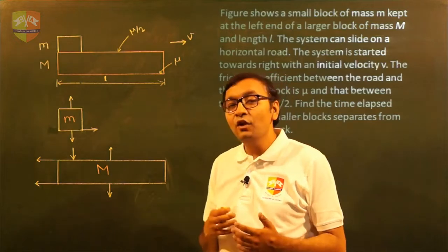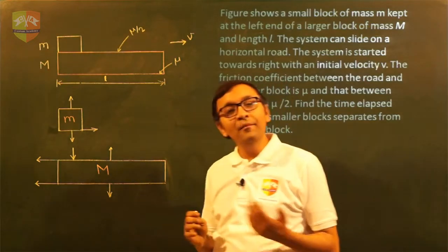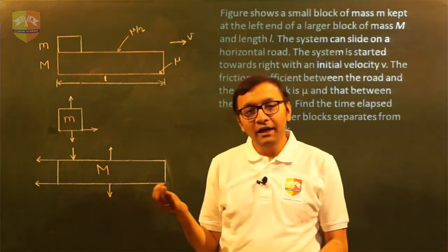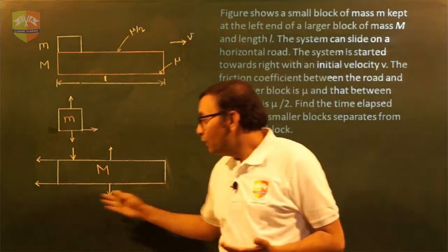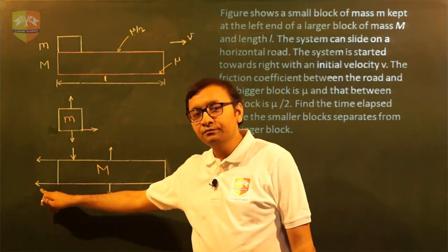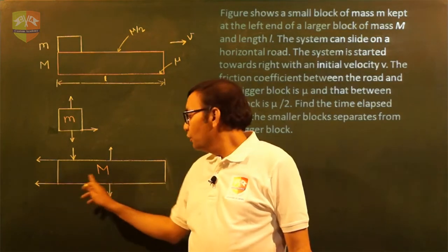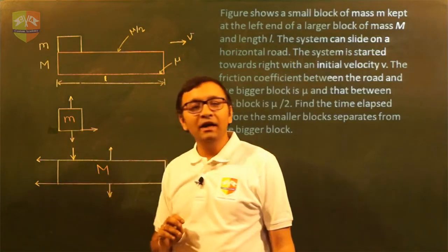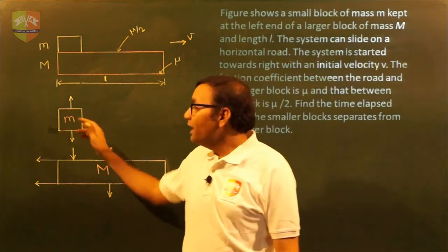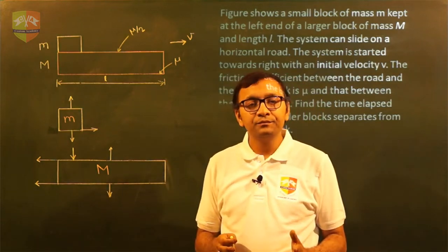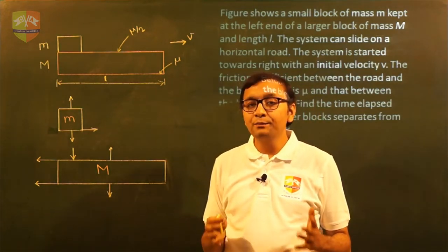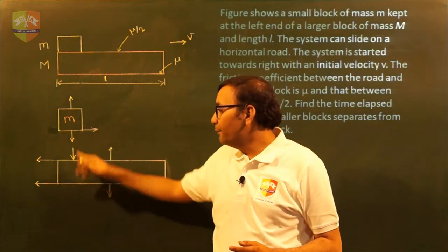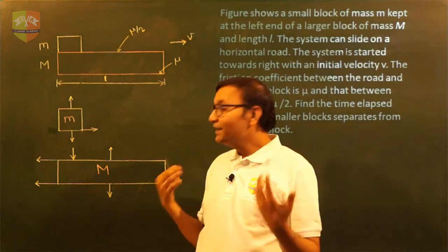What is the direction of friction force on capital M from the ground? Of course it is moving relatively forward, so from the ground there must be a friction in the backward direction on capital M. What about friction between small m and capital M? Now small m was at rest initially and it has been pulled towards the right hand side because of the friction between capital M and small m. So that is the reason why friction force on small m will be forward direction.